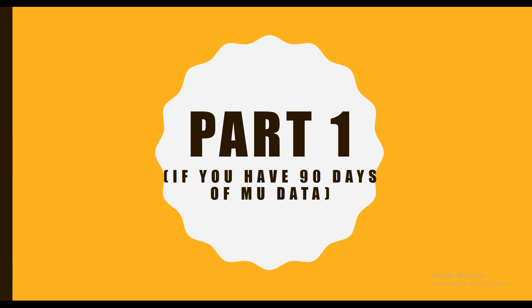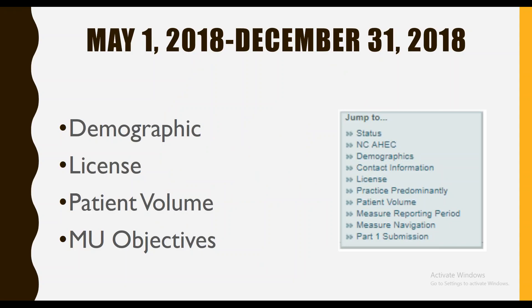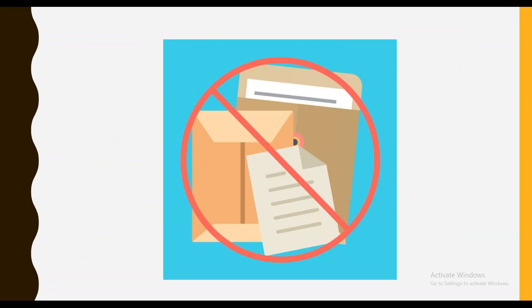Part 1: If you already have 90 days of MU objective data that meets CMS's requirements, you may submit Part 1 of the attestation May 1, 2018 through December 31, 2018. In Part 1 of the attestation, you'll be attesting to demographic, license, patient volume, and MU objective data. You are not required to sign or email any documentation for Part 1. The attestation packet will be emailed only once, and that's after the submission of CQMs, which is Part 2.